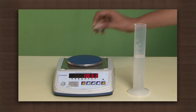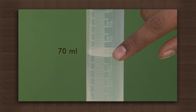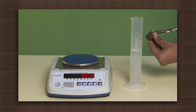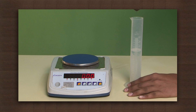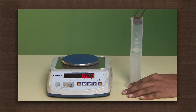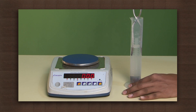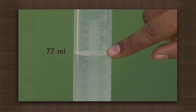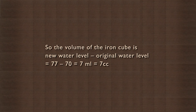Now we take the measuring cylinder filled with 70 ml of water. Using a pair of tongs, put the iron cube in the water. The water level rises to 77 ml. So the volume of the iron cube is the new water level minus the original water level, or 77 minus 70, which is 7 ml or 7 cc.